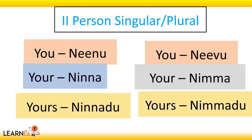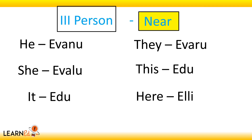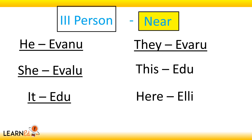Now let's go to the third person. He: iwanu. She: iwalu. It: idu. They: iwaru. This: idu. Here: illi.